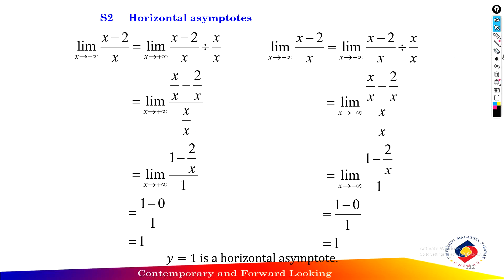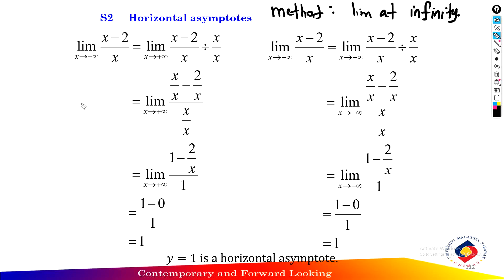Step two: find the horizontal asymptote of the function. First, find the limit as x approaches positive infinity of x minus 2 over x. Find the highest degree of the denominator, which equals x. Then divide both numerator and denominator by x.